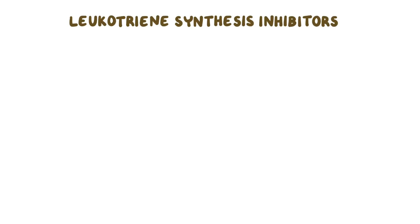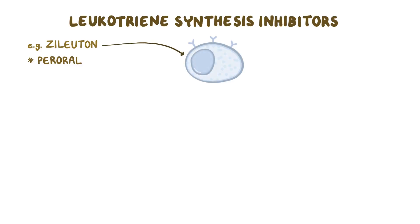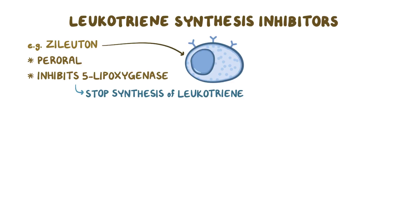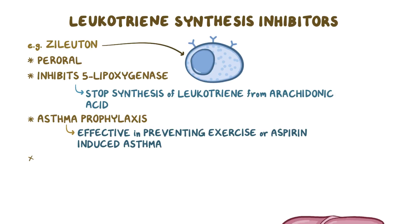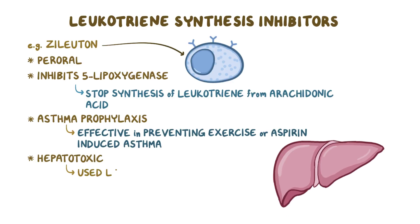Next let's move on to the leukotriene synthesis inhibitors, like zileuton, which is also peroral. After absorption, it enters immune cells like mast cells and inhibits the enzyme 5-lipoxygenase, which stops the synthesis of leukotriene from arachidonic acid. Just like leukotriene receptor antagonists, they're also used for asthma prophylaxis and are effective in preventing exercise- or aspirin-induced asthma. However, they are hepatotoxic, so they're used less frequently.